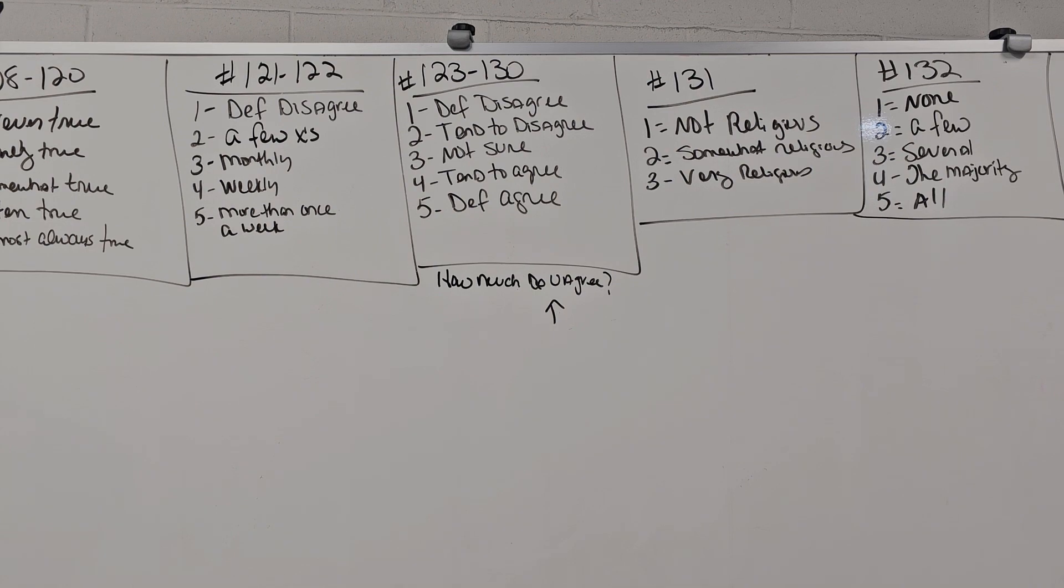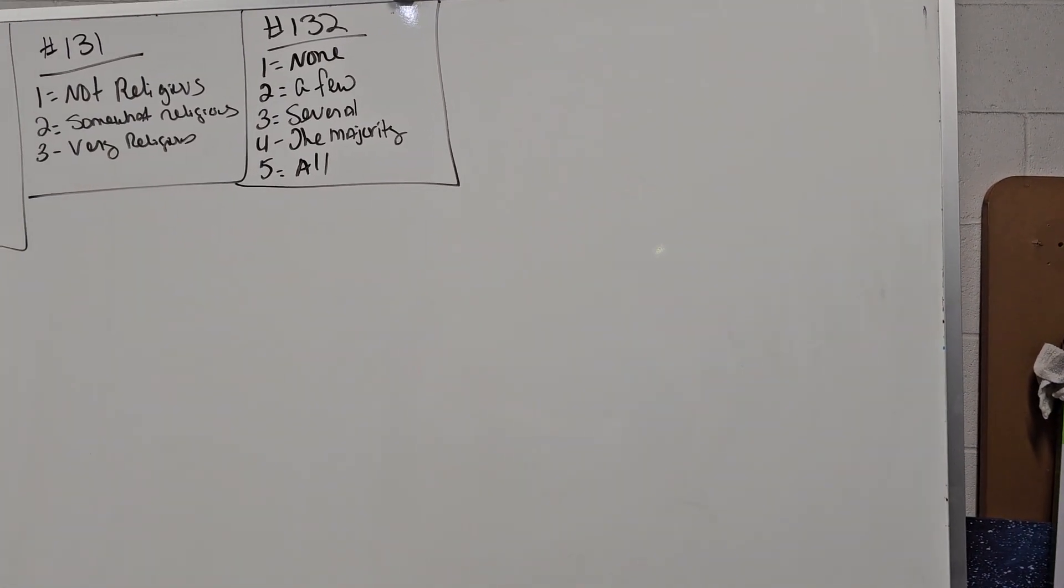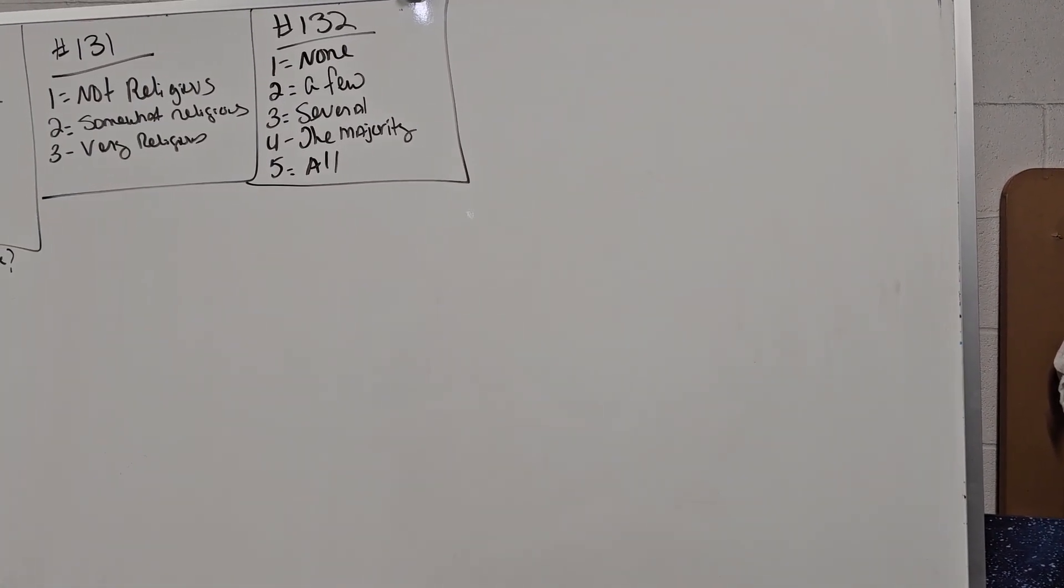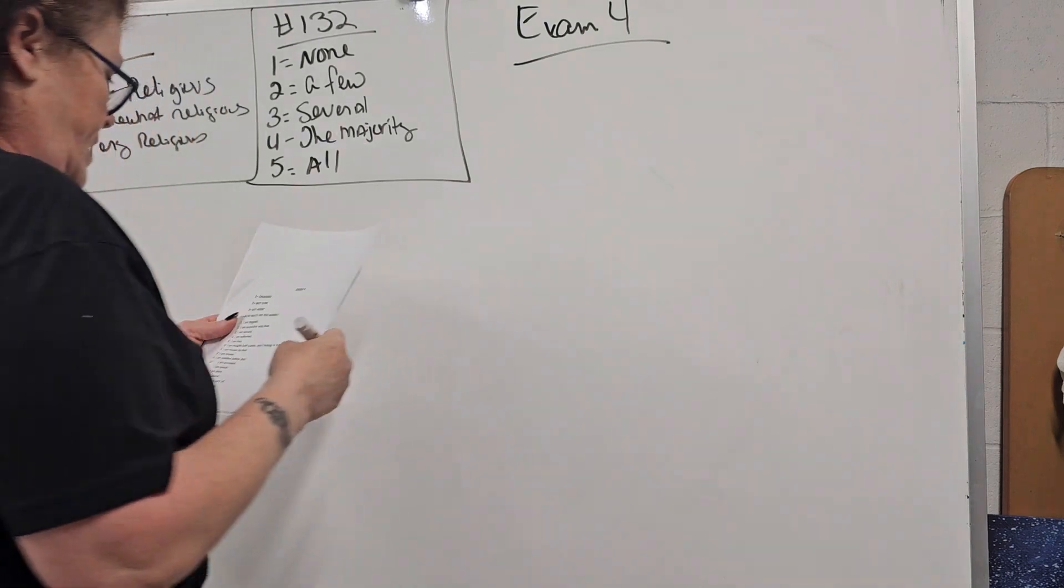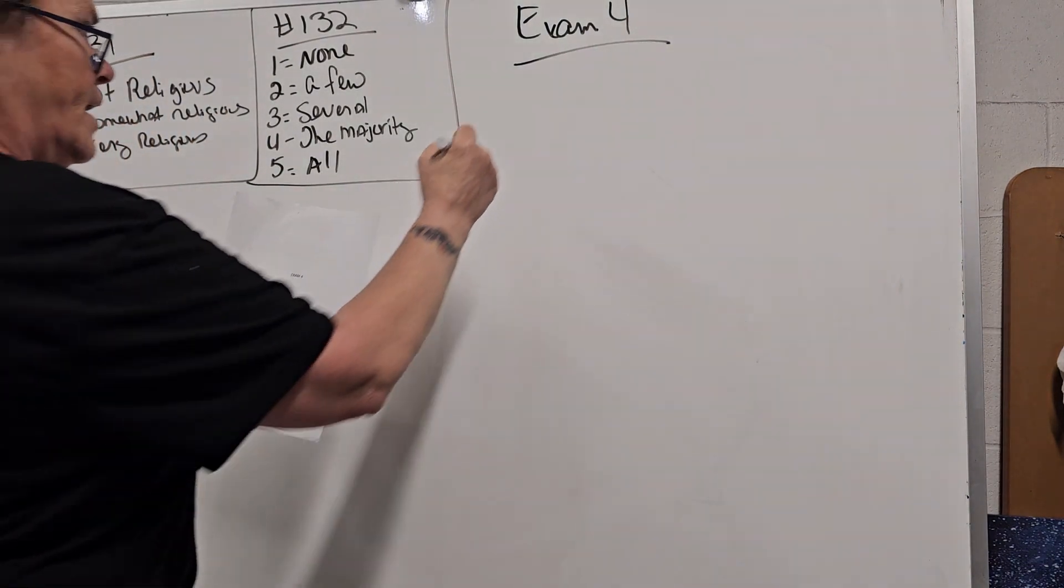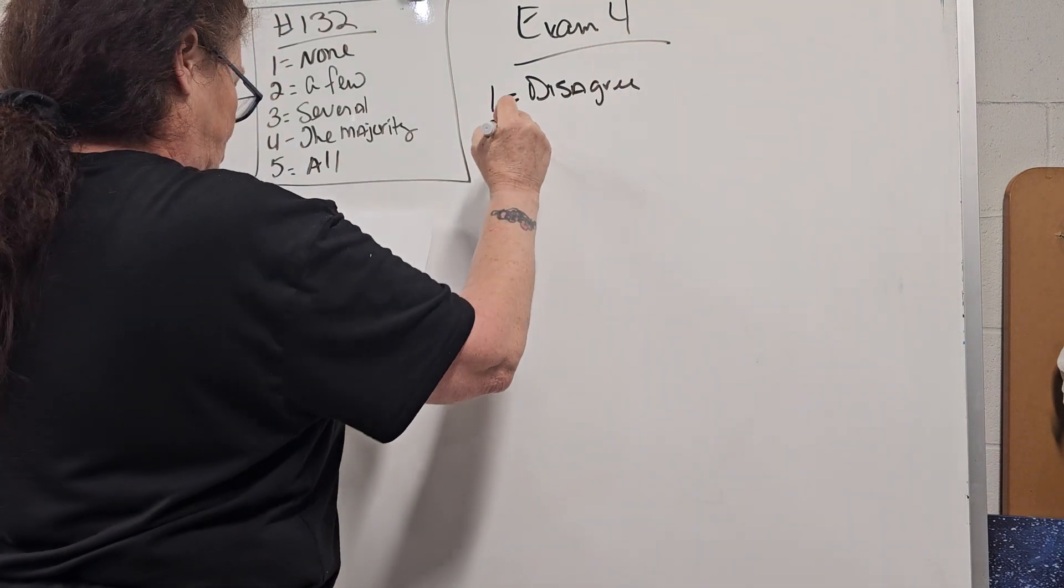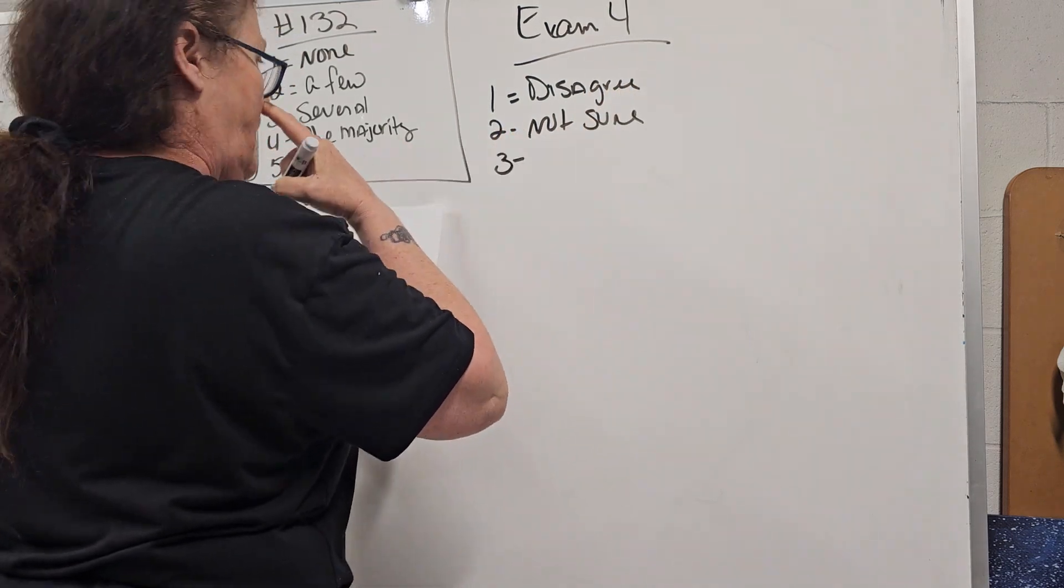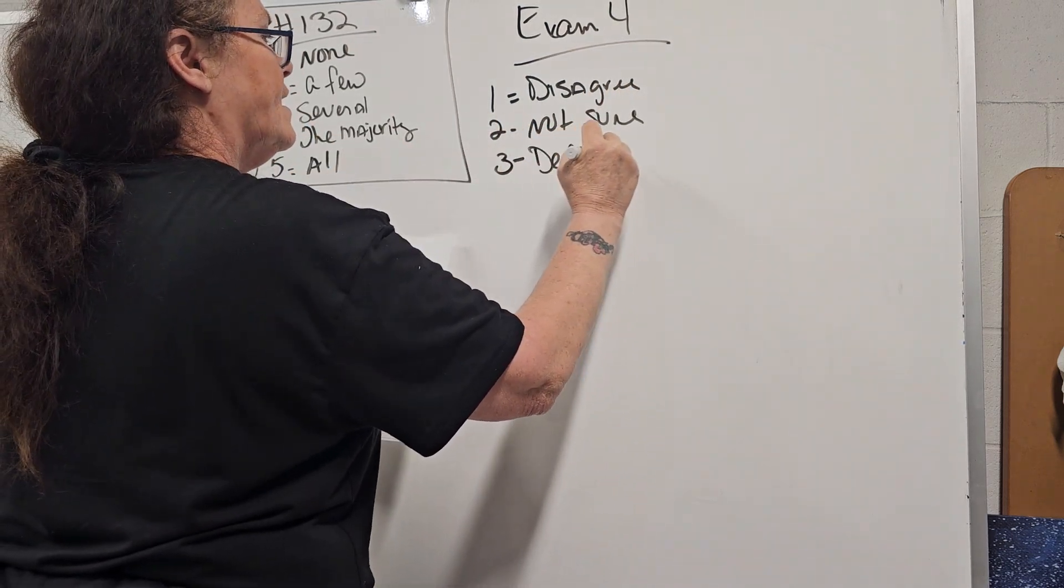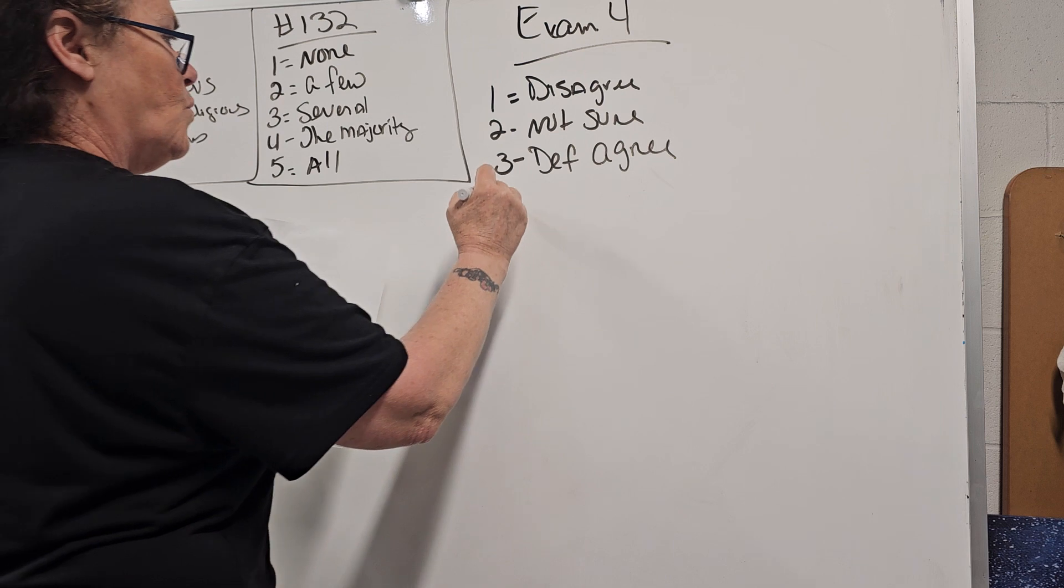Okay now we're going on to exam four. You're going to literally write down exam four on your next sheet. And you're going to put one equals disagree, two not sure, three I definitely agree. And you're going to put how much do you agree.